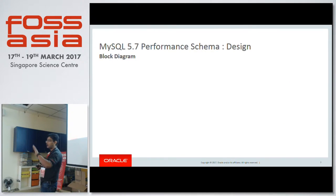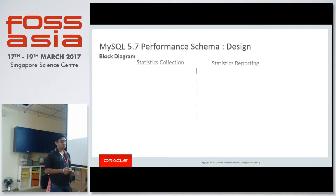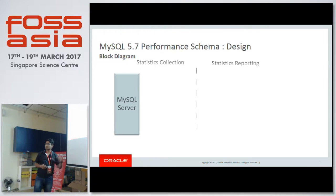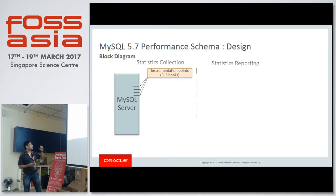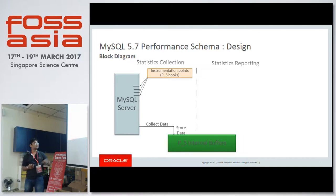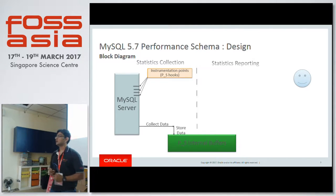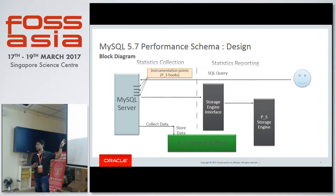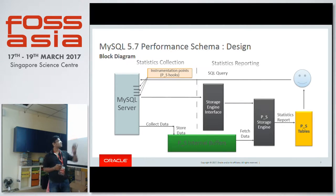Performance Schema has two parts: one where we collect statistics, and one where we report them. In the MySQL server source code we have different code points, which we call hooks or instrumentation points. When the server is running and control reaches these points, it is transferred to Performance Schema, which collects runtime statistics and stores them in internal buffers. When a user wants to see statistical information, they fire queries on Performance Schema tables, which fetches data from those internal buffers and presents it.